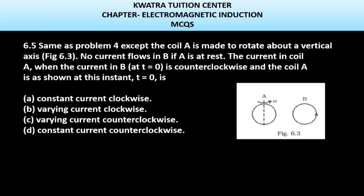Let's start with question number 5. It says same as problem 4, which we discussed in the last question, but there is a little difference. Here you have given that coil A is made to rotate about a vertical axis. First of all, this A is the vertical axis around which it moves.